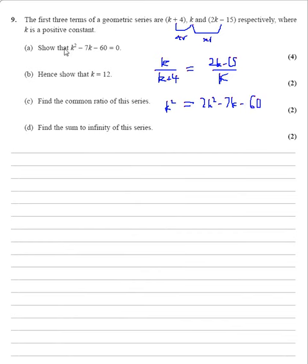And the next line would be that one, which I'm not going to write out. Hence, show that k equals 12. So from here, which would be on the next line I wrote, show that k equals 12, we're going to factorize.